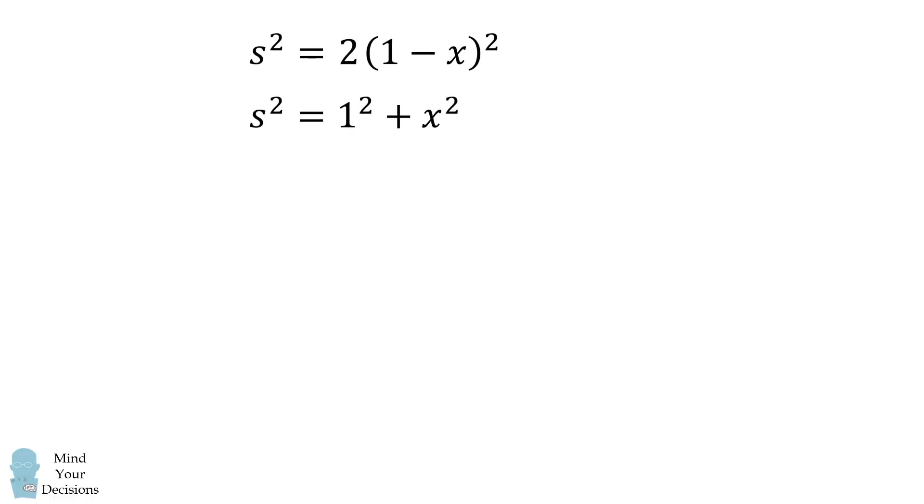We'll consider this system of equations. We'll subtract the second equation from the first, and the s squared terms will cancel out. We then get an equation in one variable x. We can routinely solve this, and we get a quadratic equation.